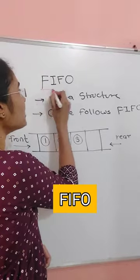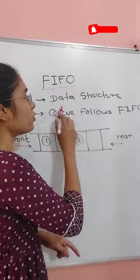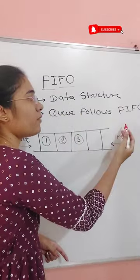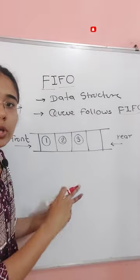Let's discuss the FIFO, First In First Out principle. First In First Out is a data structure. Queue follows the FIFO principle. Let's see an example - this is the queue.